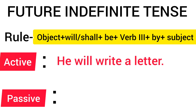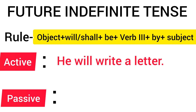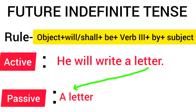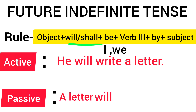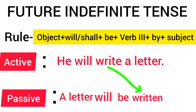Our sentence is: 'He will write a letter.' We will write a letter. So what do we have written in the rule? Object. So what is the object? A letter. So a letter will be the subject in passive. Since it is the object, 'will' goes with it, then we add 'be', then the verb third form. So: 'A letter will be written.'